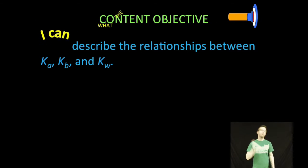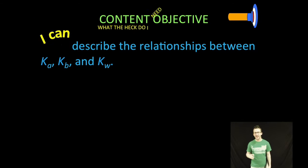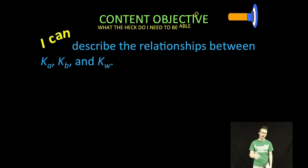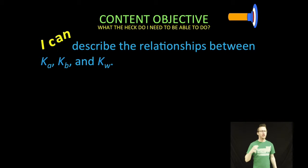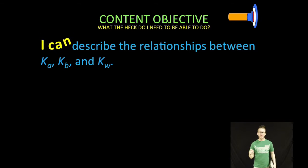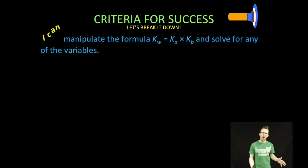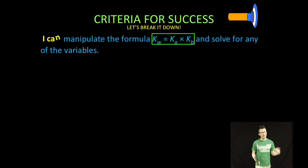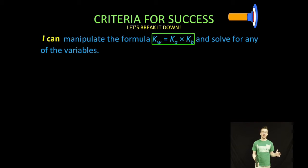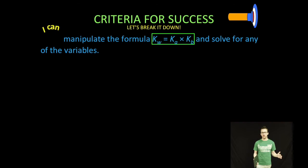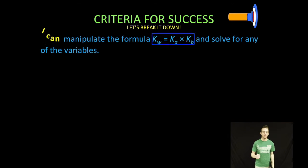Hey, what's up everybody, it is Mr. Boylan and today we are going to describe the relationships between Ka, Kb, and Kw. We're going to take a look at the equation Kw equals Ka times Kb and we're going to solve for any of the variables. We're gonna bust out some amazing math skills — algebra!